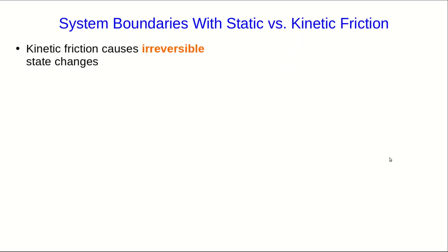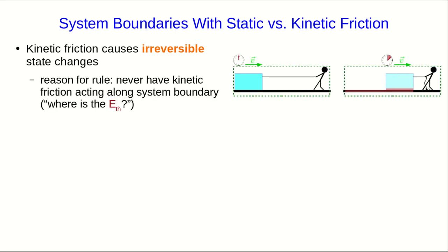Static friction is in one way simpler, and in another way quite a bit more complicated. Let me just remind you, kinetic friction causes irreversible state changes, and so that means it produces thermal energy. And that's our reason for the rule that we should never have kinetic friction acting along the system boundary. We have this question of where the thermal energy ends up. We want it to end up all in our system to make our energy accounting easier.